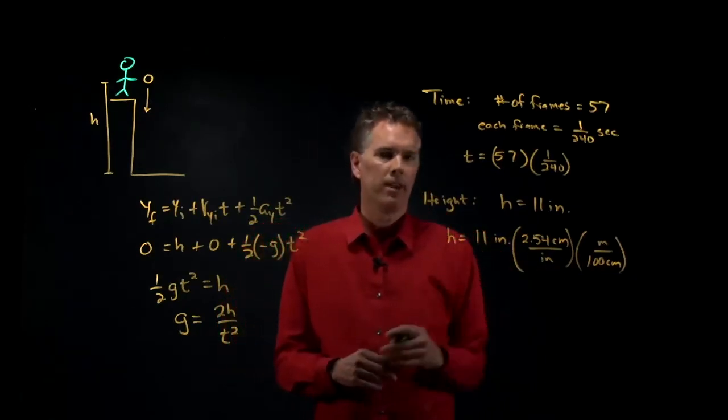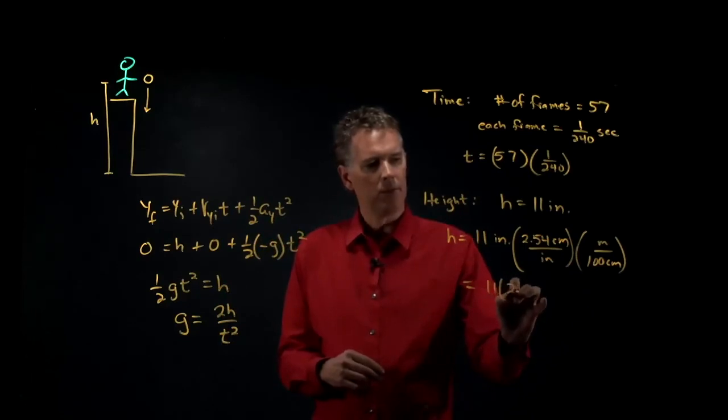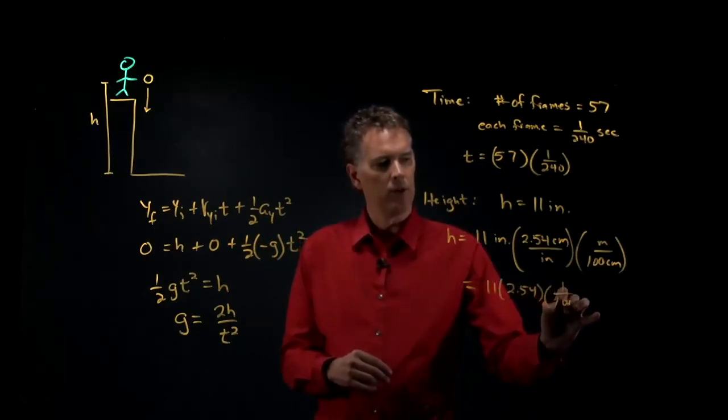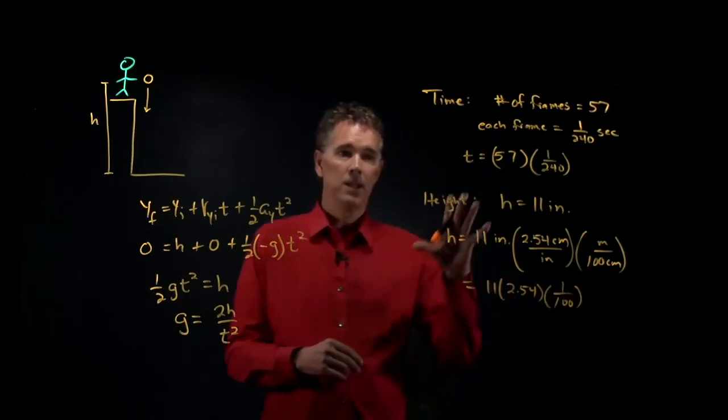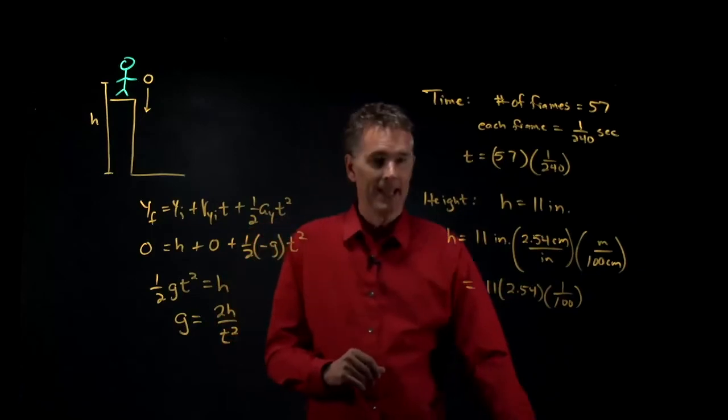So now we have h. h equals 11 times 2.54 times 1 over 100. Now we can take all this information and plug it back in for g and see what we get.